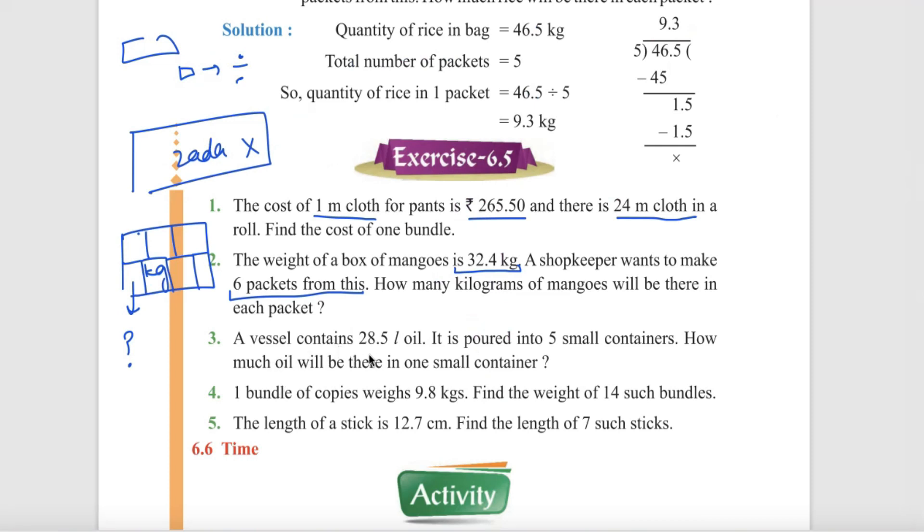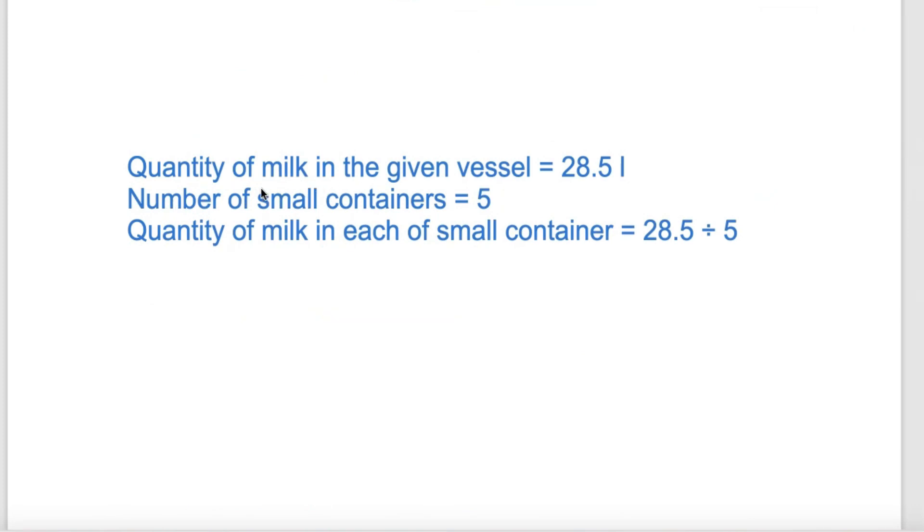A vessel contains 28.5 liters. It is poured into 5 small containers. The quantity of milk in the given vessel is 28.5 liters. The number of small containers is 5. What is the quantity per container? 28.5 divided by 5: 5 into 28 goes 5, 25, remainder 3, bring down decimal, 35 divided by 5 is 7. Quantity of milk in each small container is equal to 5.7 liters.